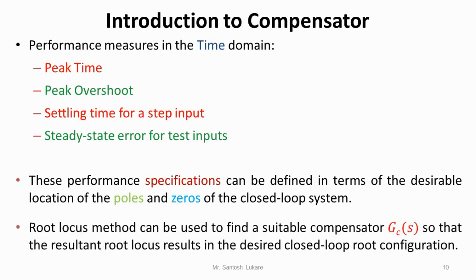The root locus is one of the best methods that can be used to find out a suitable compensator — let us say Gc(s) — so that the closed loop system will give the desired performance in terms of all these specifications.